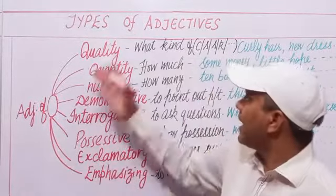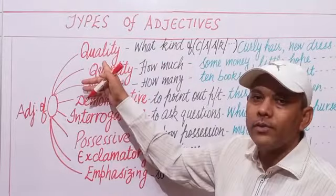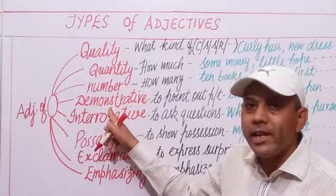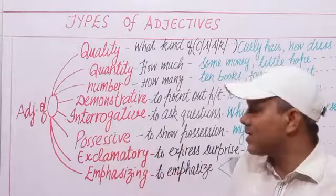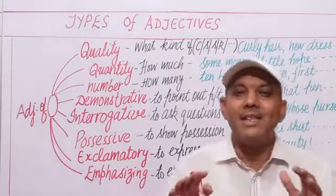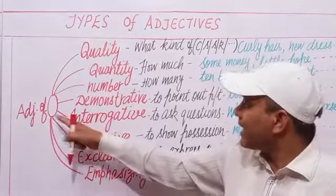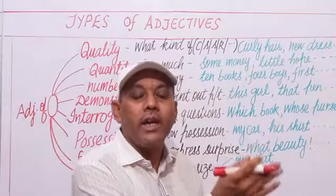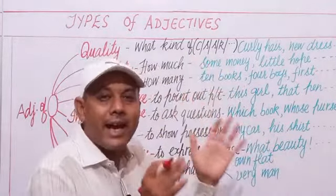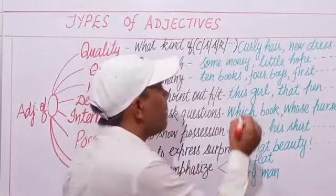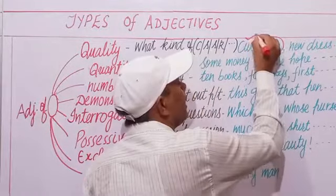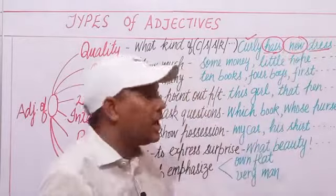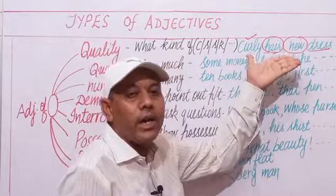Types of adjectives: adjectives of quality, adjectives of quantity, adjectives of number, demonstrative adjectives, interrogative adjectives, possessive adjectives, exclamatory adjectives, and emphasizing adjectives. Adjectives of quality tell us what kind of person, place, or thing — their color, size, or shape. For example, 'curly hair' — 'curly' is the adjective and 'hair' is the noun; 'new dress' — 'new' is the adjective.